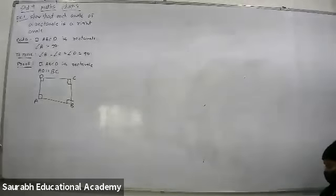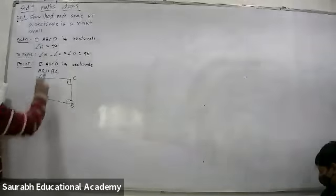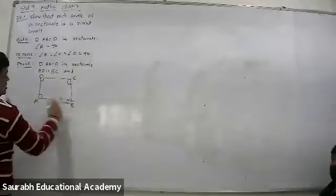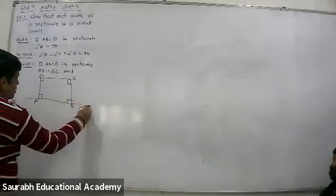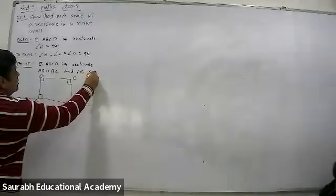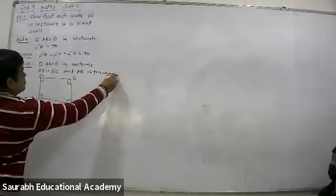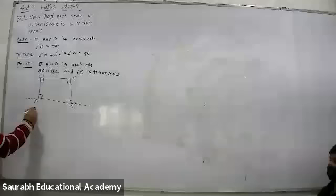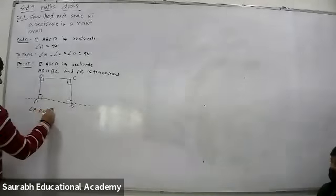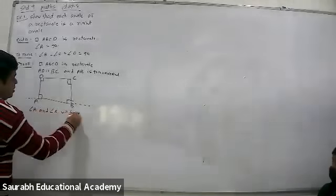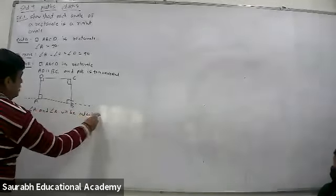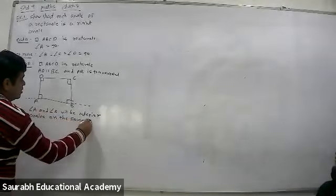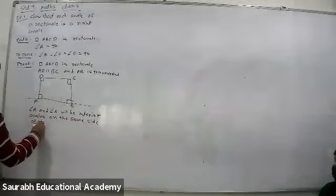You are given angle A is 90 and AB is parallel to BC. AB is parallel to BC and AB is transversal. AB is transversal. Therefore, angle A and B will be interior angles on the same side of transversal.